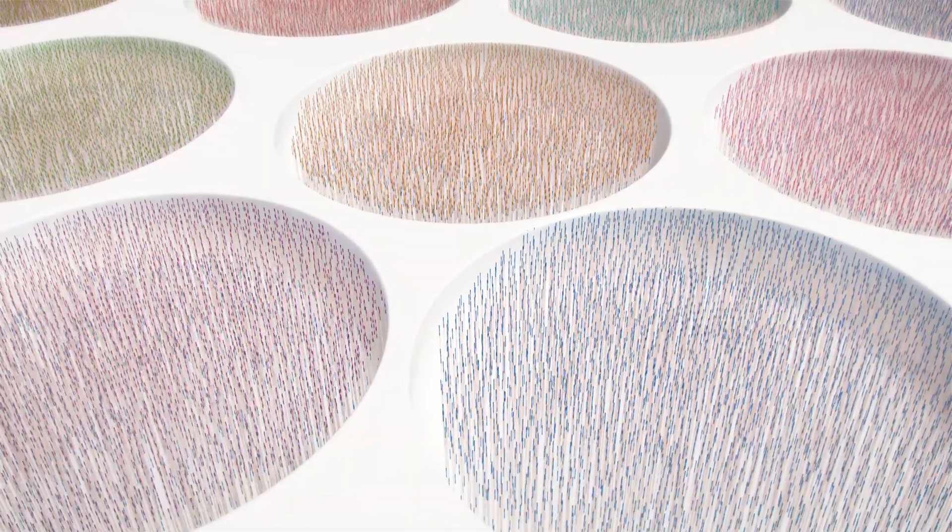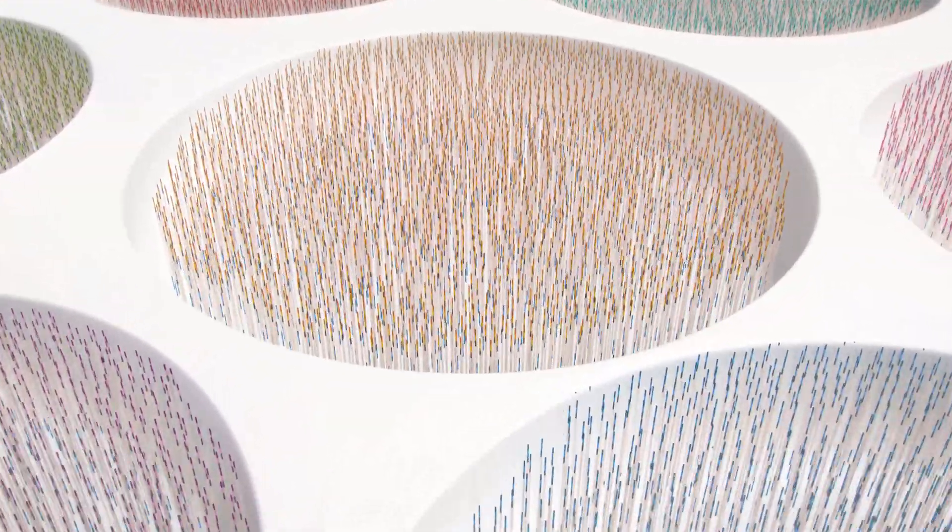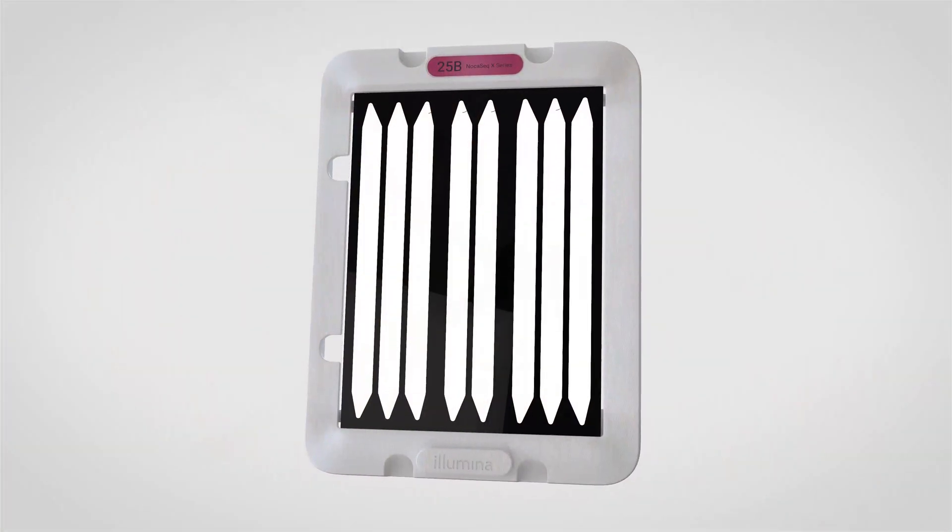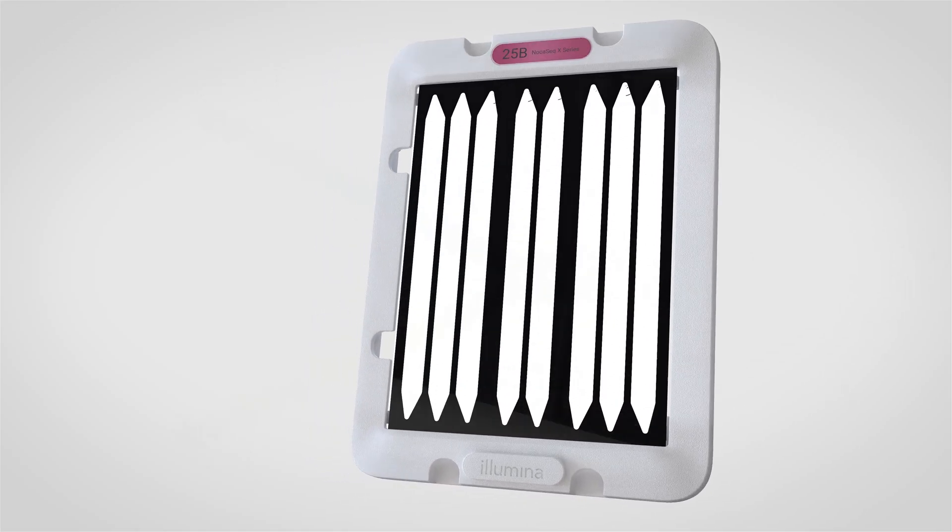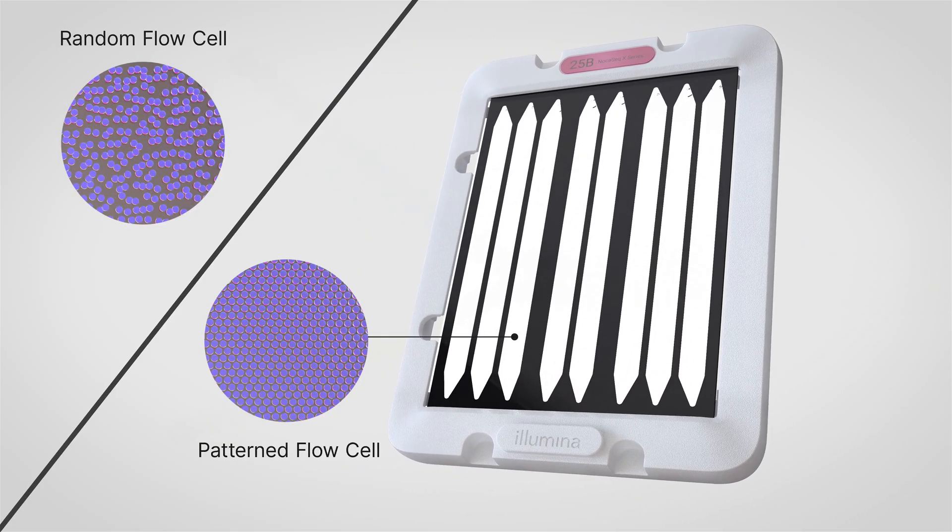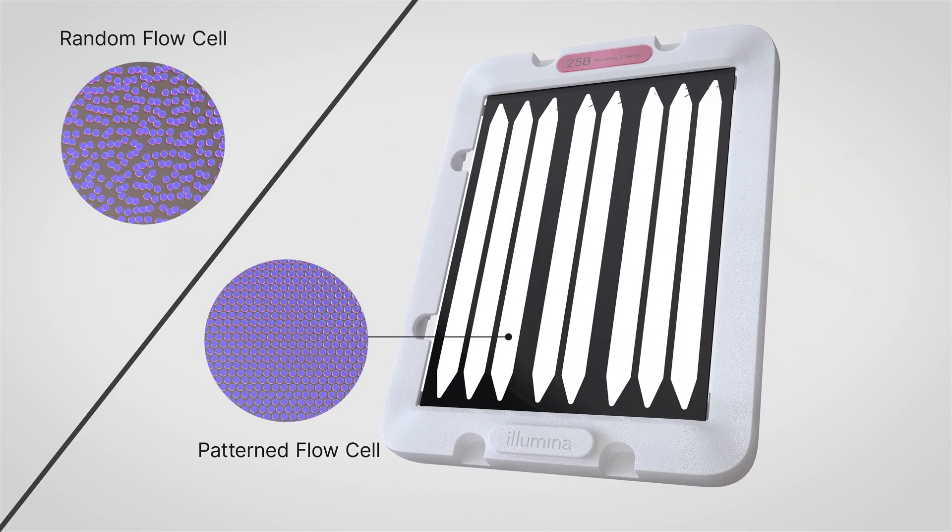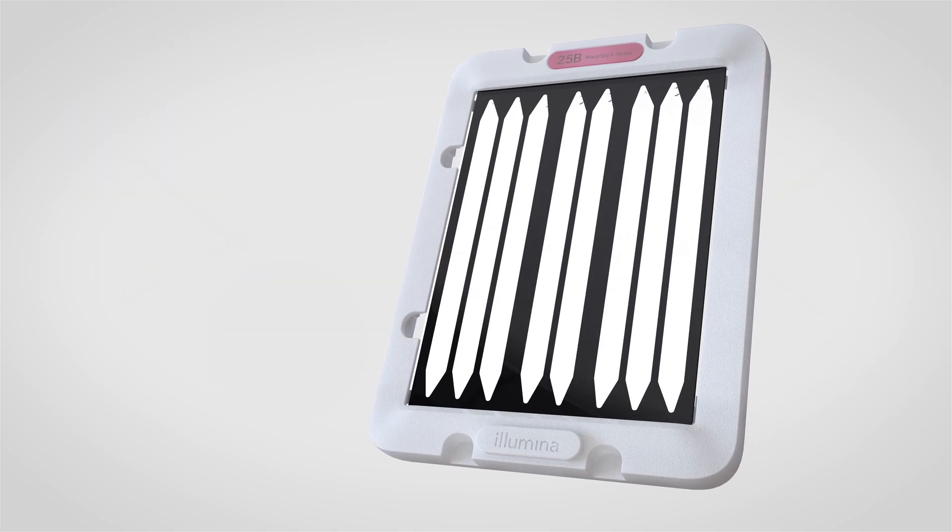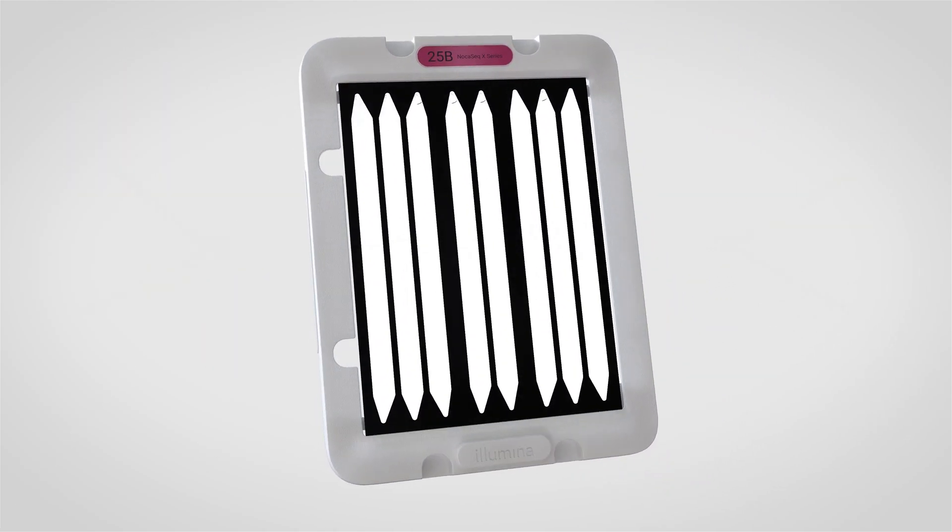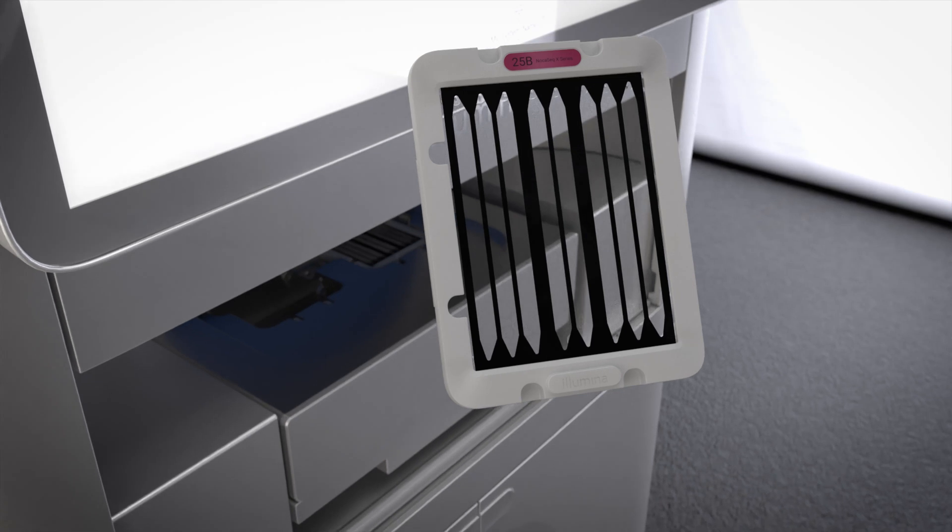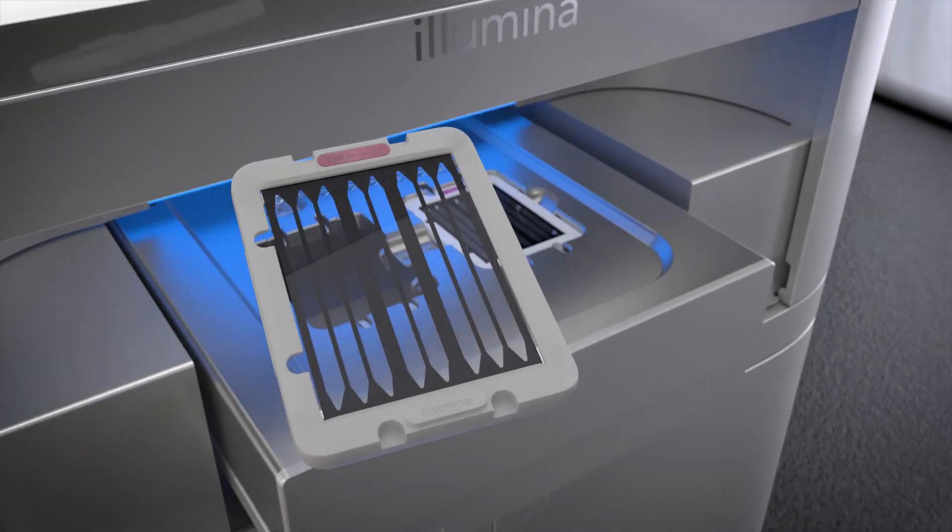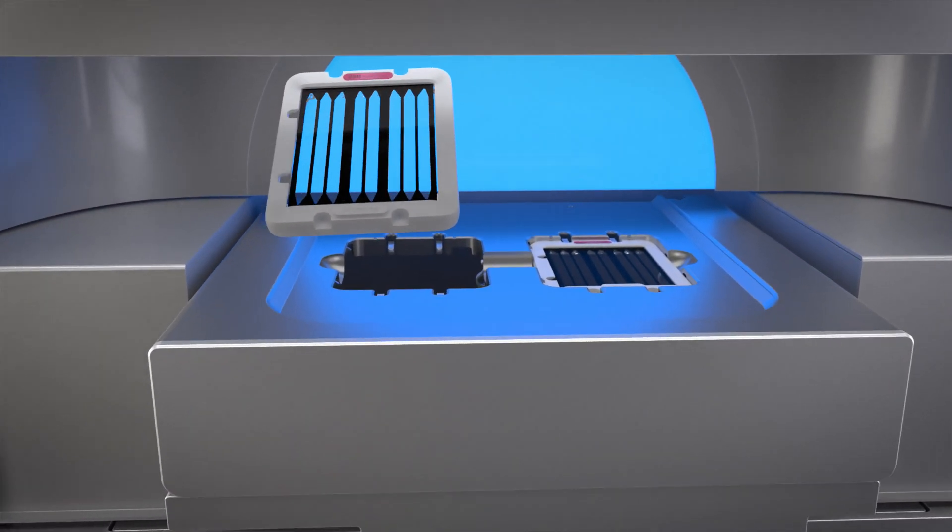Illumina utilizes two flow cell architectures: random flow cells with a lawn of oligos over the entire surface, and patterned flow cells with oligos only in nano wells. Newer Illumina systems utilize patterned flow cell technology to create clusters at greater density and efficiency.